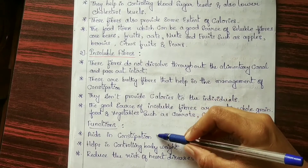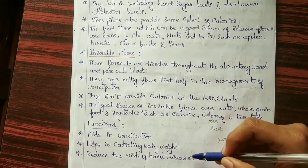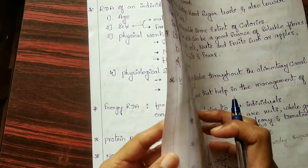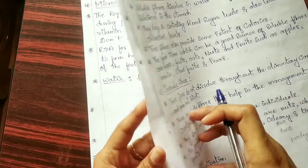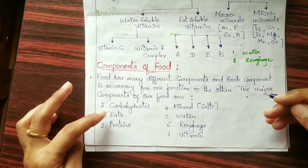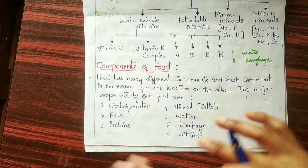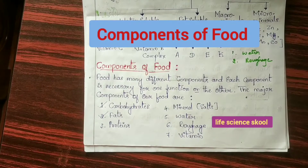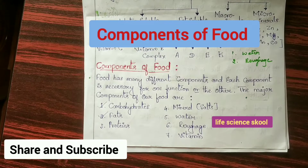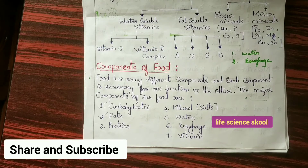The functions of fibers include: aids in digestion, helps in controlling body weight, and reduces the risk of heart diseases. That concludes this video on the components of food. I have now completed all the components: carbohydrates, fats, proteins, minerals, water, roughage, and vitamins. I hope this is helpful — study well and do well in your examinations. If this video helped you, please hit the like button, share, and thank you everyone.